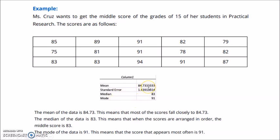The mean is 84.73. What does it tell us? The mean of the data is 84.73. This means that the scores fall closely to 84.73.